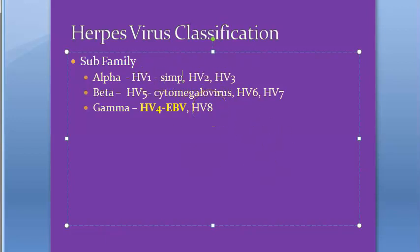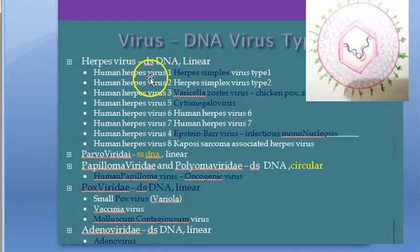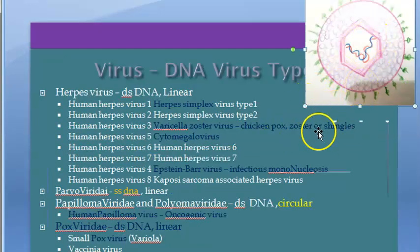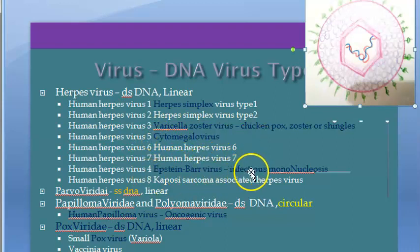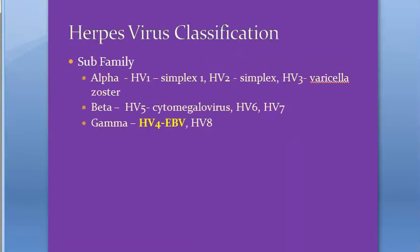To recap: 1 is herpes simplex virus type 1, 2 is herpes simplex virus type 2, 3 is varicella zoster — that's chickenpox. Then cytomegalovirus is 5. 4 is Epstein-Barr virus which causes infectious mononucleosis. 8 is Kaposi sarcoma associated herpes virus. Classification of herpes virus is done.